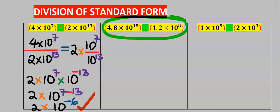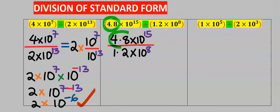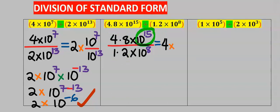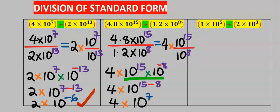Next, let's solve this problem. 4.8 divided by 1.2 gives 4. Then 10 to the power of 15 divided by 10 to the power of 8 — applying the law of indices, 15 minus 8 is 7. So our answer is 4 times 10 to the power of 7.